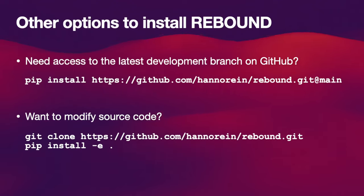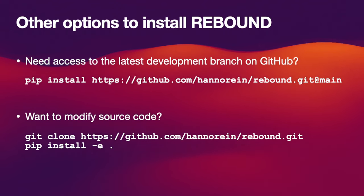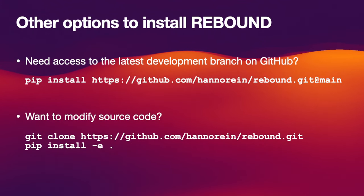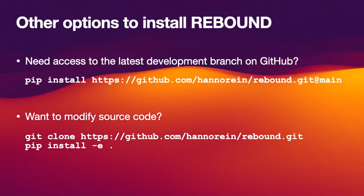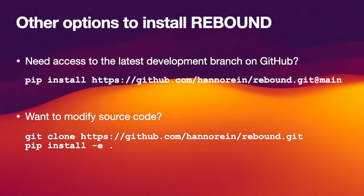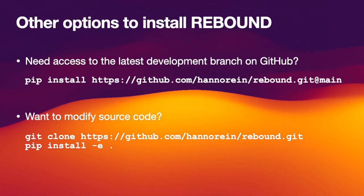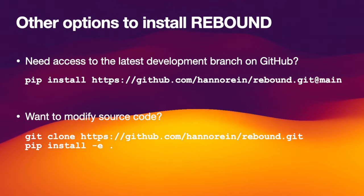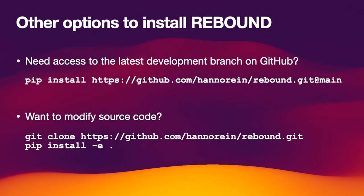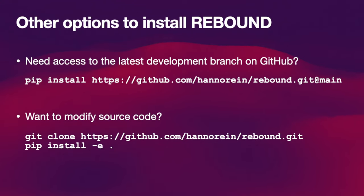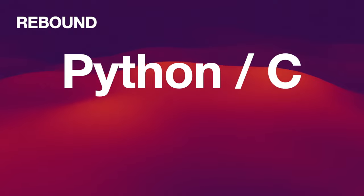There are a few other options to install REBOUND if you have different requirements. For example, if you need access to the latest development branch of REBOUND — a feature that hasn't made it into the main branch just yet — you can also use pip to install that specific branch. Just give it the URL of github.com/hannorein/rebound.git and after the @ sign, add the specific branch you would like to install. Another alternative is to download the source code of REBOUND manually using git clone. Once you have the source code, you can edit it, add features, or change things. If you want the Python interface, type pip install -e . for the current directory to install REBOUND in development mode. This allows you to modify everything in REBOUND internally, though you may need to run pip install again whenever you change the source code. That's all that's required to install the Python version of REBOUND.